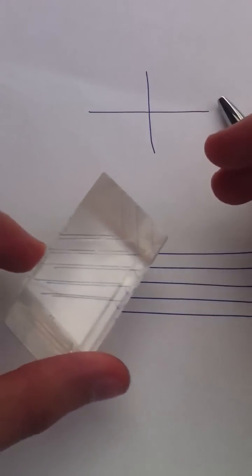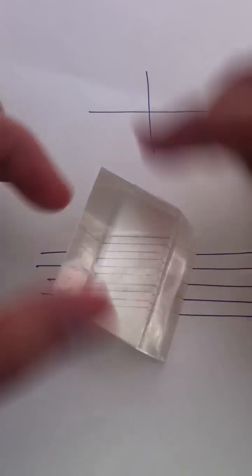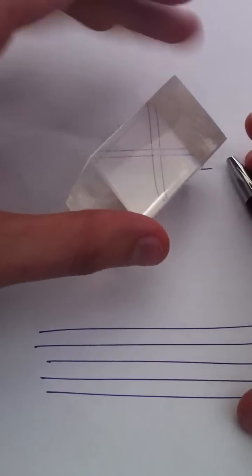As you can see, I've got all the lines here, but when I introduce the crystal, the lines shift. Then I turn it, same thing with this.